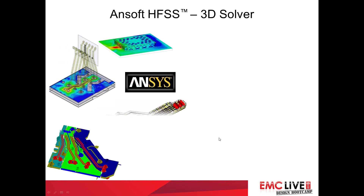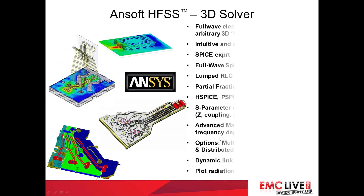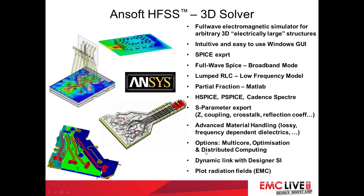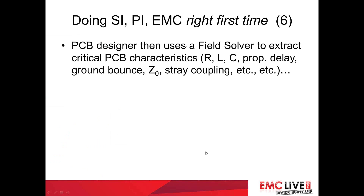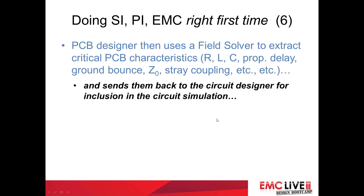Here are some more examples of extracting various parameters — there's a big connector here. The board designer inserts these models for the various connectors and other structures into the board, and extracts the critical board characteristics like resistance, inductive capacitance, propagation delay, ground bounce, characteristic impedance, and so on. These are the critical board characteristics that he knows he's got to look out for, either from his own experience or what the circuit designer is asking him to check.